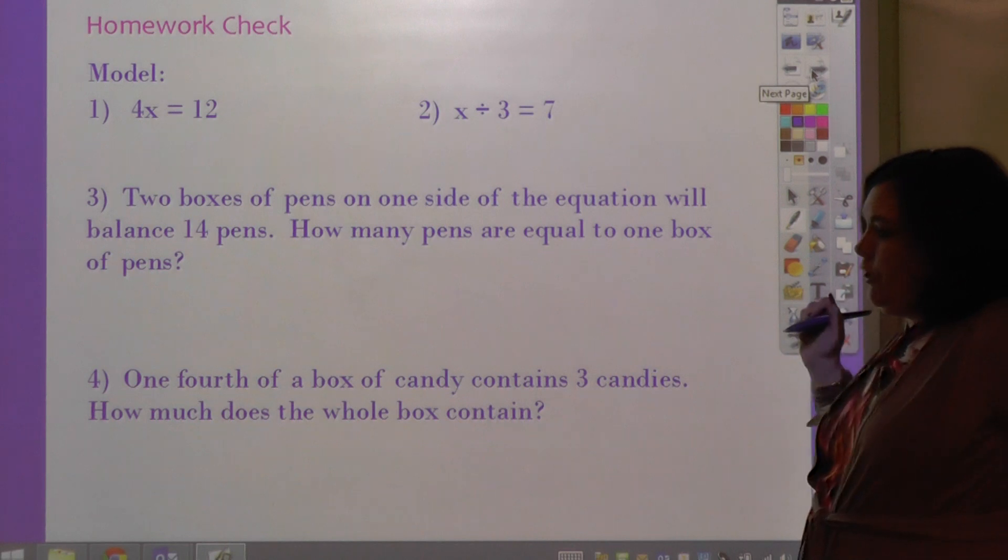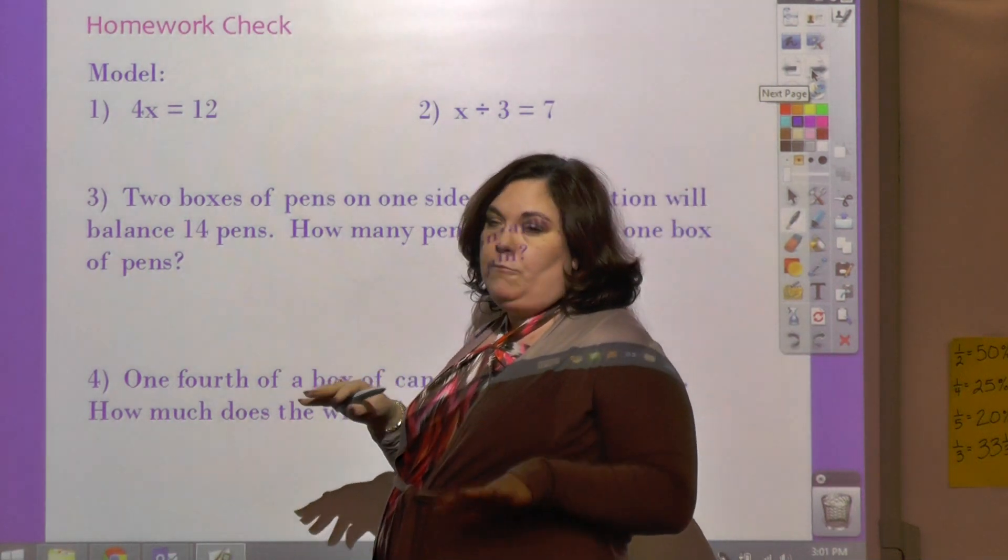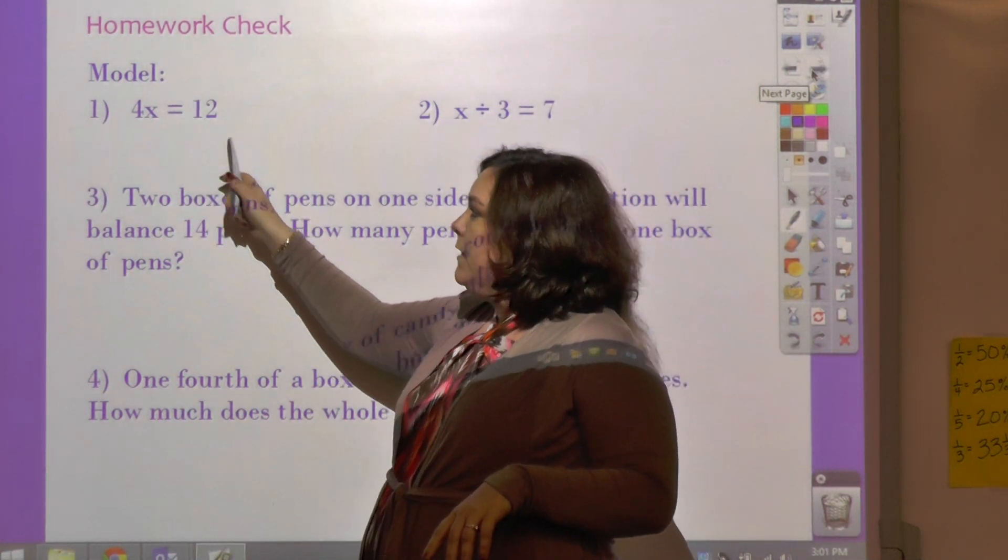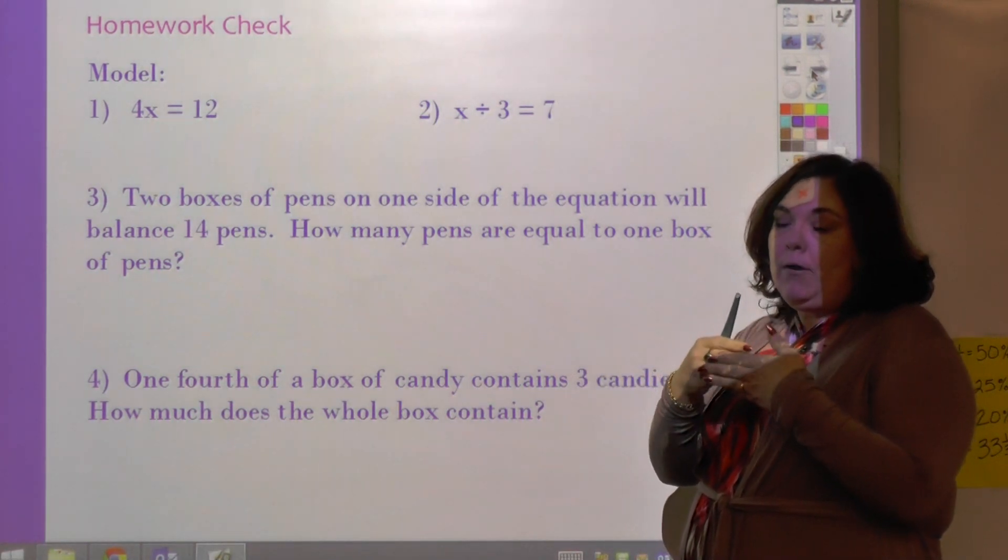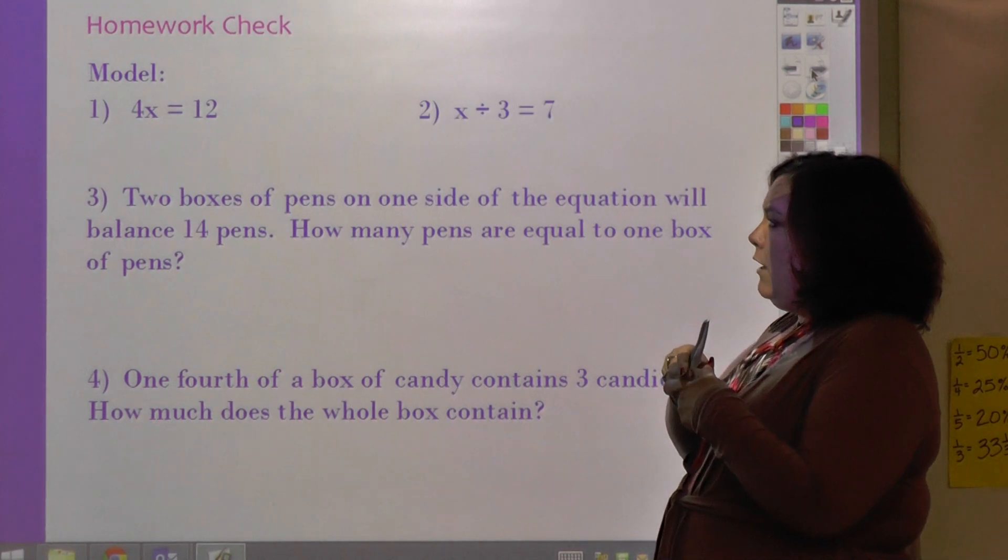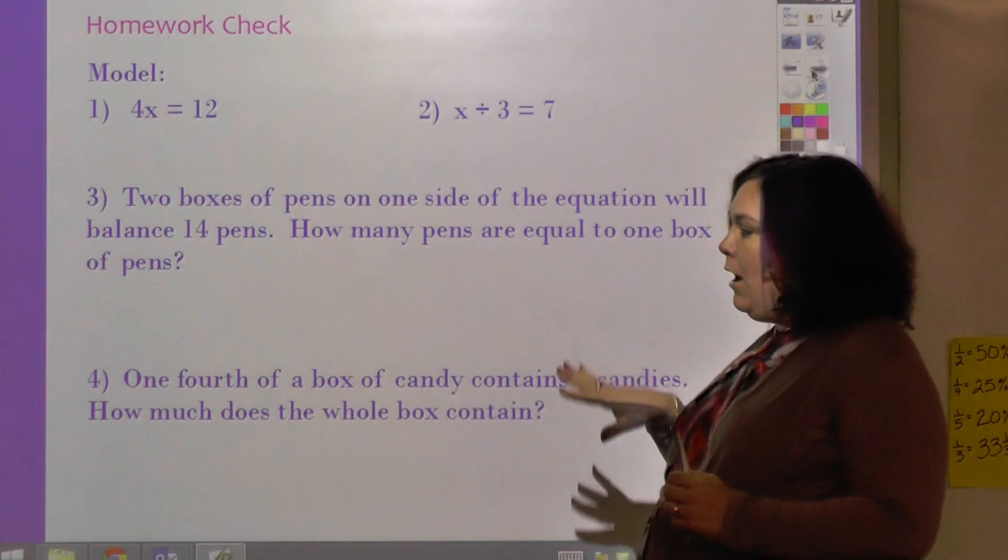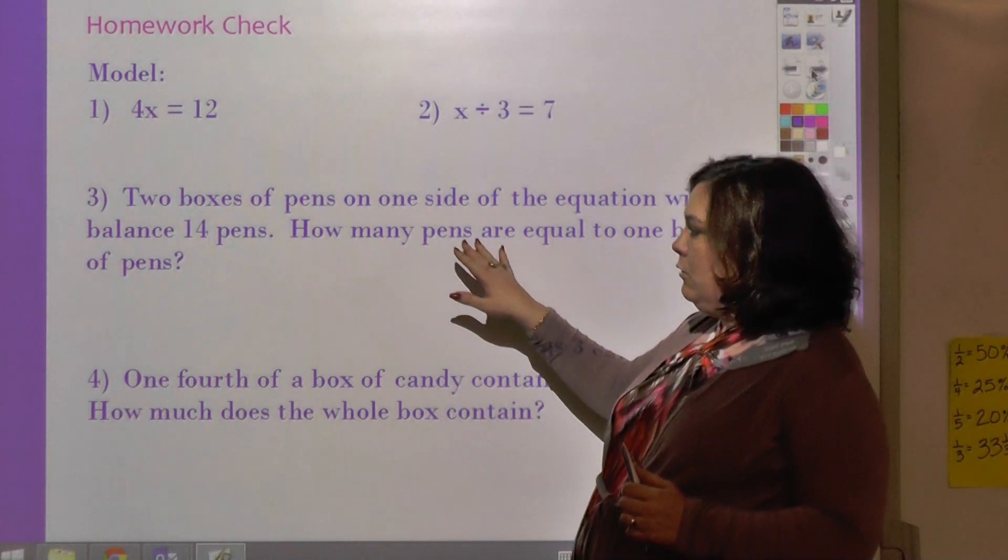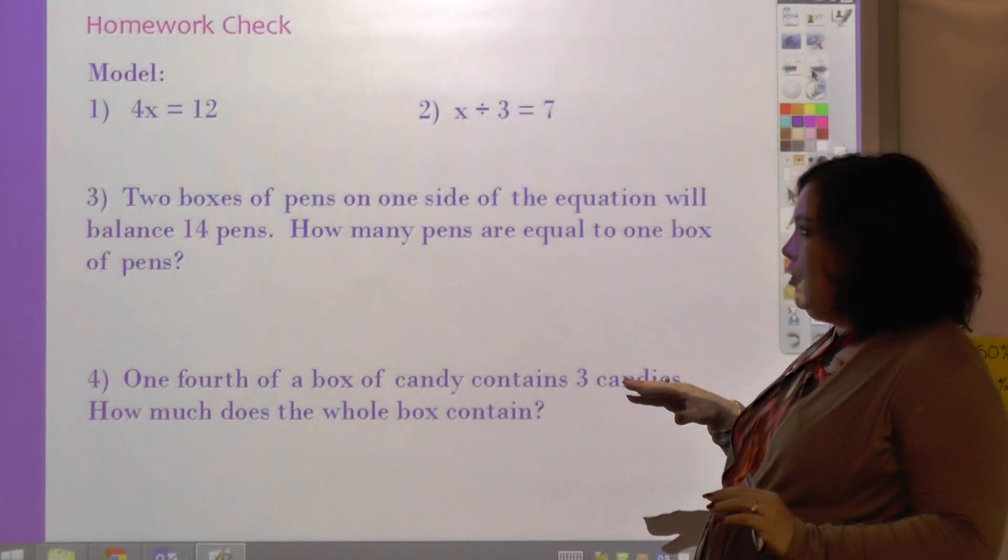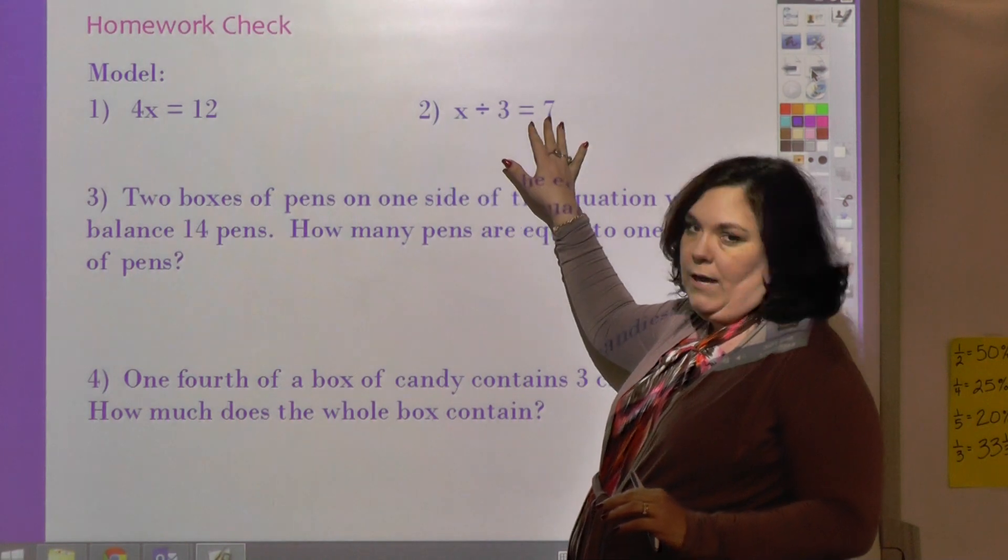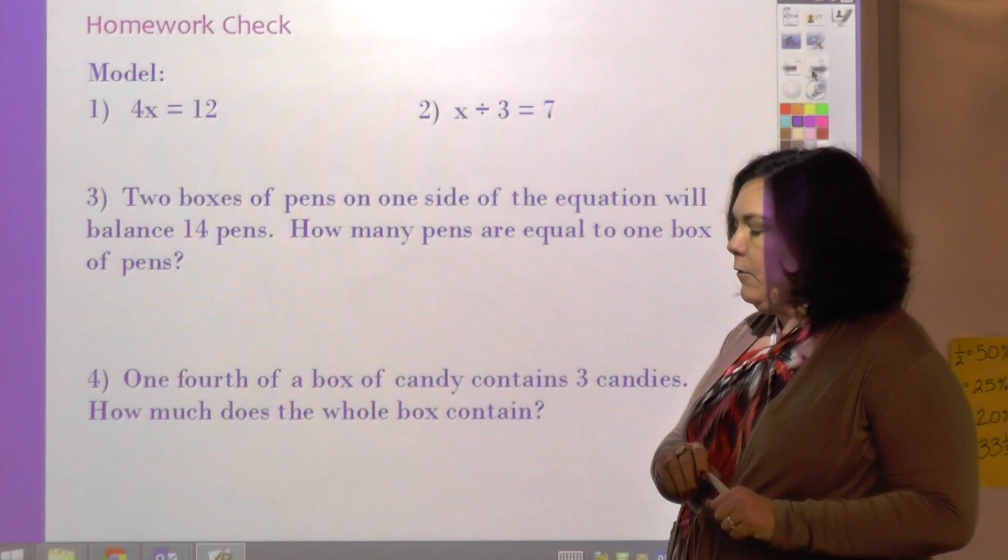So here's your homework check. You're basically going to have to model on your own paper how to solve this and this one, and put your number answers into your Google Doc in Edmodo. And then you have a couple more to model and put the answers in. These are the word problems with the boxes and the pens and balancing them out. It's just putting into words what the equations say. So try this out and we'll go over it in class.